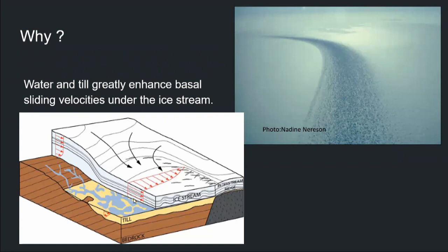Ice streams usually have water and till at their base that greatly enhances basal sliding and therefore increases the velocity of the ice. If we look at this figure here on the lower left corner, we have some ice that is overlying till, and that is the part that goes super fast. If we have just bedrock that is not malleable, not permeable, and not deformable, that will not help the ice to move faster. We have ice overlying a very deformable till sediment that is probably filled with water, because we have liquid water below the ice sheets. And all of that is just the perfect recipe to create fast-flowing ice.